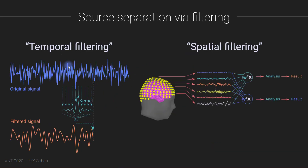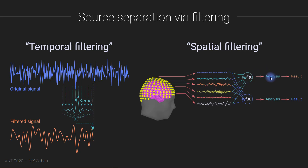In the previous video we looked at temporal filtering; here we look at spatial filtering. The concept is the same. We have data from lots of different electrodes and we combine them: X is a matrix of data — channels by time — and W is a vector of weights, a single number for each channel. The weighted combination of all the different channels gives us a component, and that's what we do data analysis on.